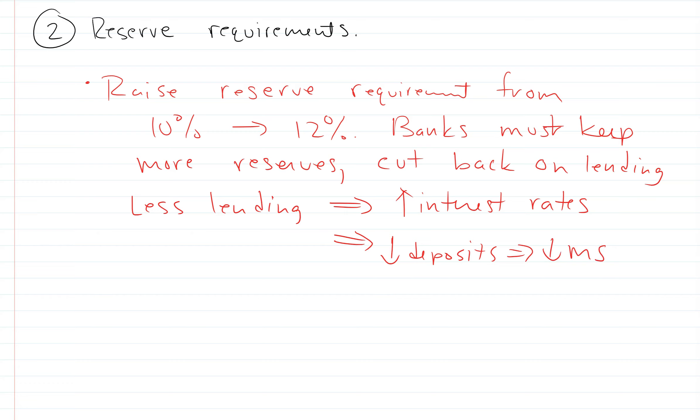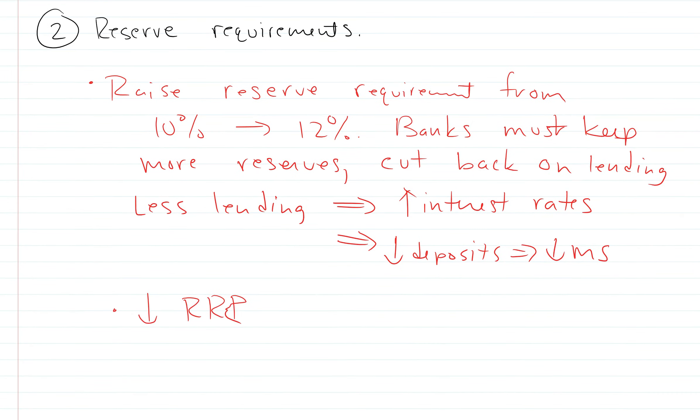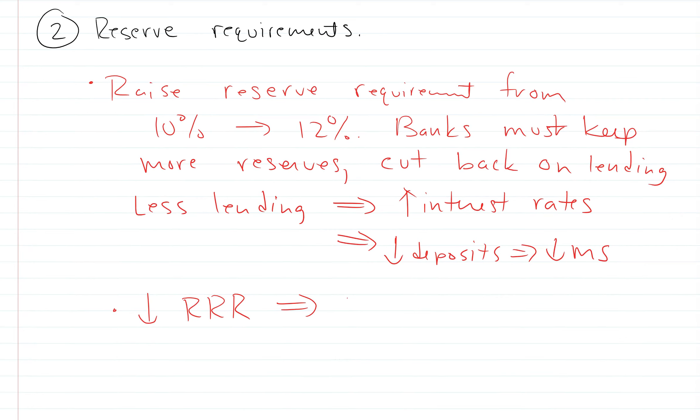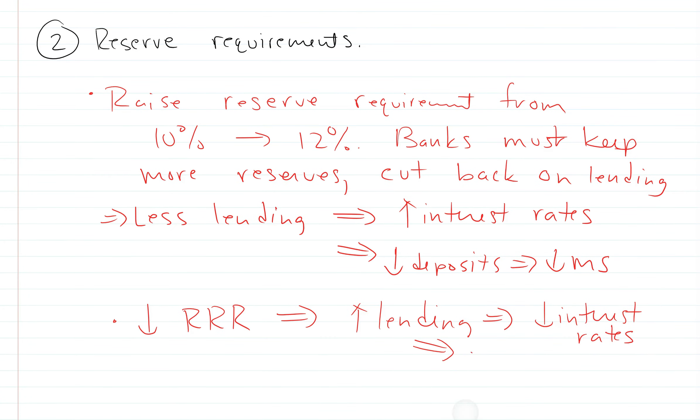So this is another way to do it. If they wanted to go the opposite direction from this, then they could lower the required reserve ratio, which will increase lending. So raising it decreases lending. The increased lending is going to decrease interest rates and it's going to increase deposits. So this is another choice they could do.